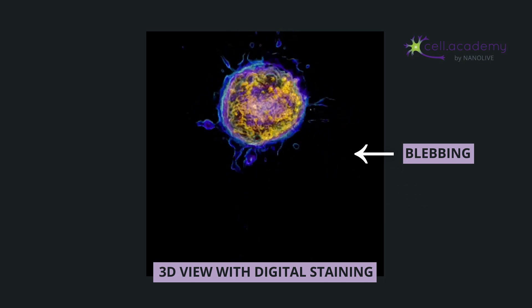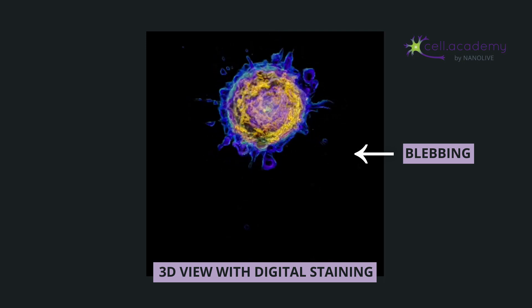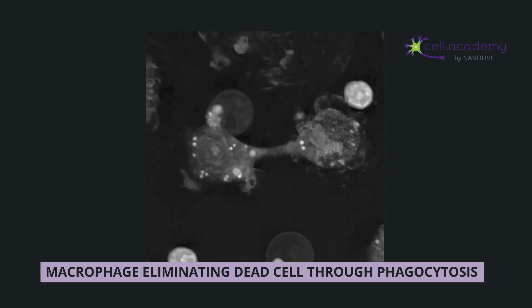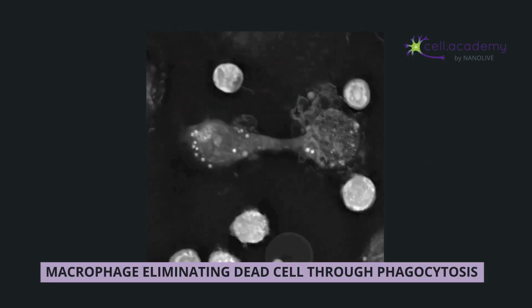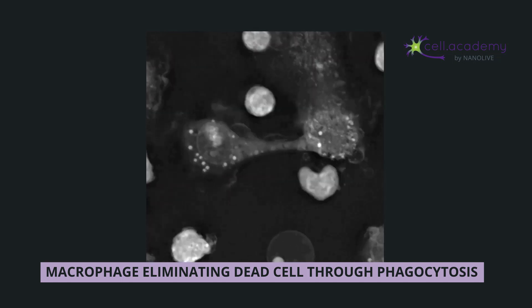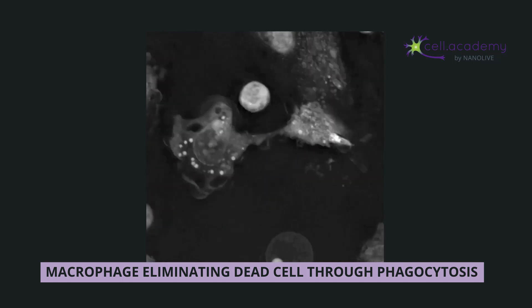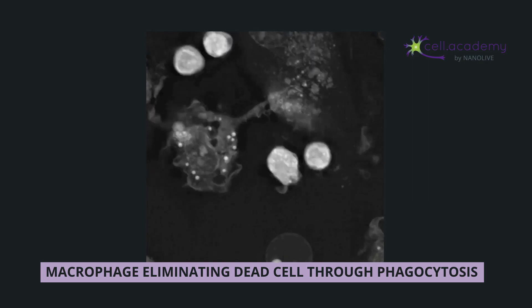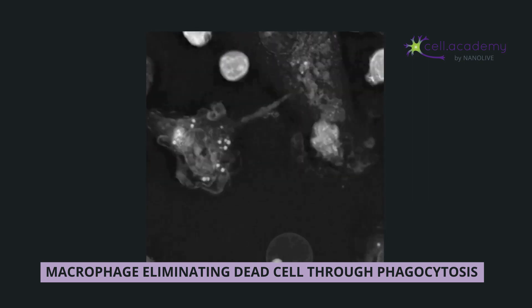Finally, the cell is broken down into apoptotic bodies that phagocytic cells can engulf and remove before the contents of the cell can spill out into the surrounding cells and cause damage to them. This is a very clean death that doesn't require an immune response, which is why we don't realize that it's happening.